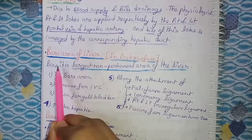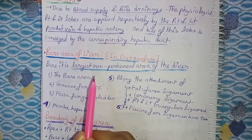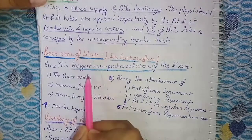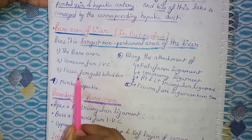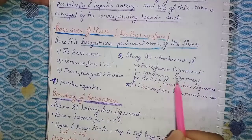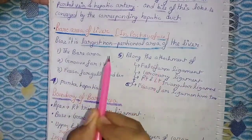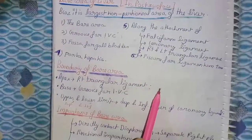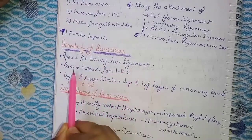What is the bare area of the liver? It is called the largest non-peritoneal area of the liver, present on the posterior surface. The bare area includes the groove for the inferior vena cava, the fossa for the gallbladder, along the attachment of the falciform ligament, the coronary ligament, right and left triangular ligaments, and the fissure for the ligamentum teres.